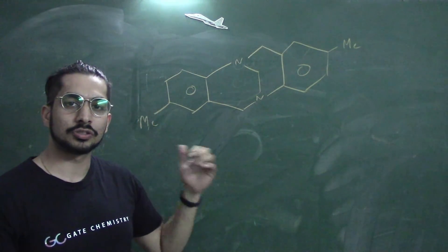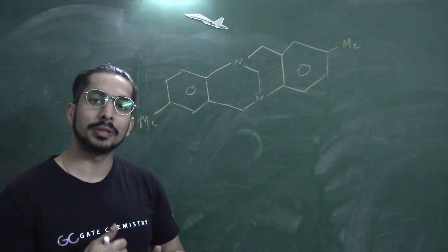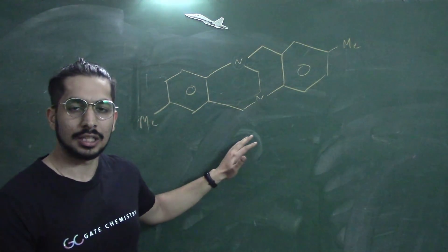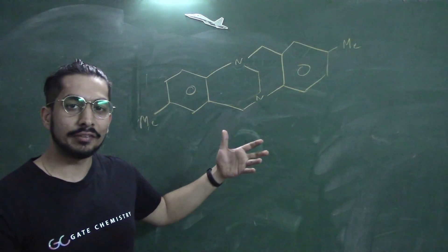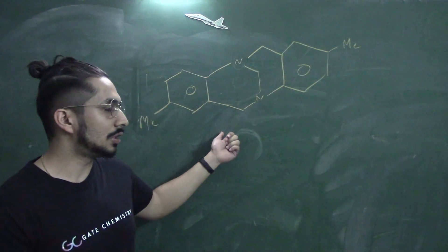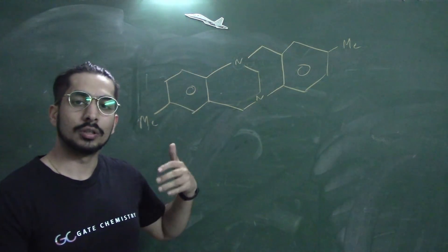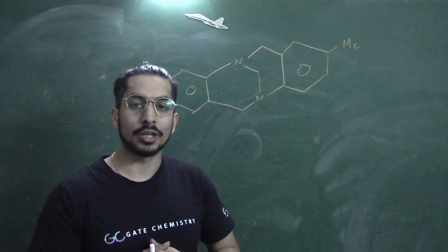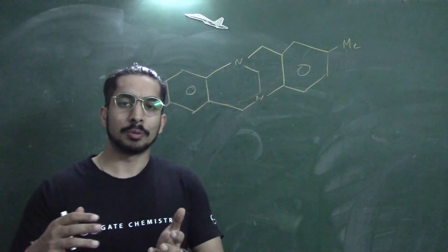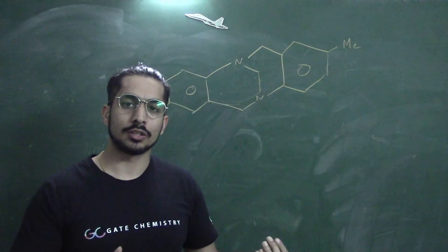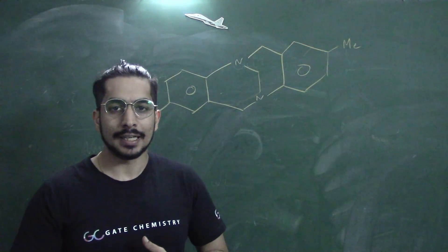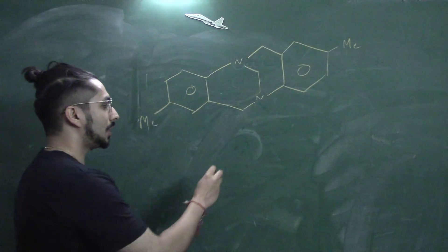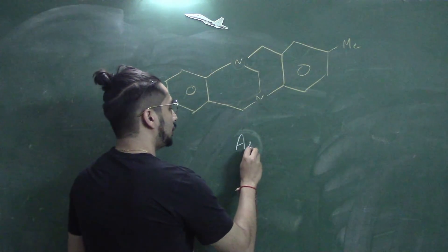If you look at this molecule, it is called Tröger's base. It's a very famous molecule because its structure could not be elucidated for 48 years. It was first identified in the 1890s by someone called Tröger, but the structure could not be deduced for 48 years because at that point there was no X-ray crystallography and no sophisticated techniques available.